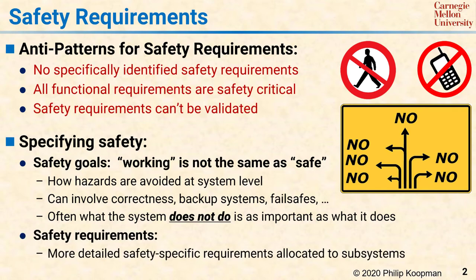Safety requirements are more detailed system requirements that support the safety goals. Typically, the big distinction between safety goals and safety requirements is that the safety requirements have been broken down so that each safety requirement can be allocated to an individual subsystem or component, whereas safety goals apply at the whole system level. To build your system, you need safety goals at the top at the system level and safety requirements that make sure the safety goals are achieved by each of the components working together.